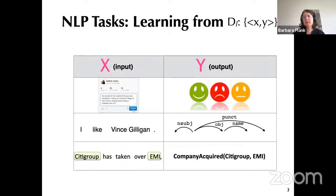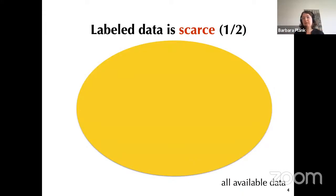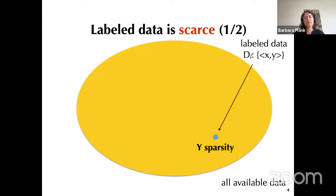If you look at NLP today, a lot of the core technology is based on learning from labeled data — learning from some input to some output. This can be labels, structures, relations, and so on. One thing in common is that getting these labels is very time-consuming and expensive, with a lot of quality control involved. I call this the problem of wide sparsity: we don't have enough labeled data.